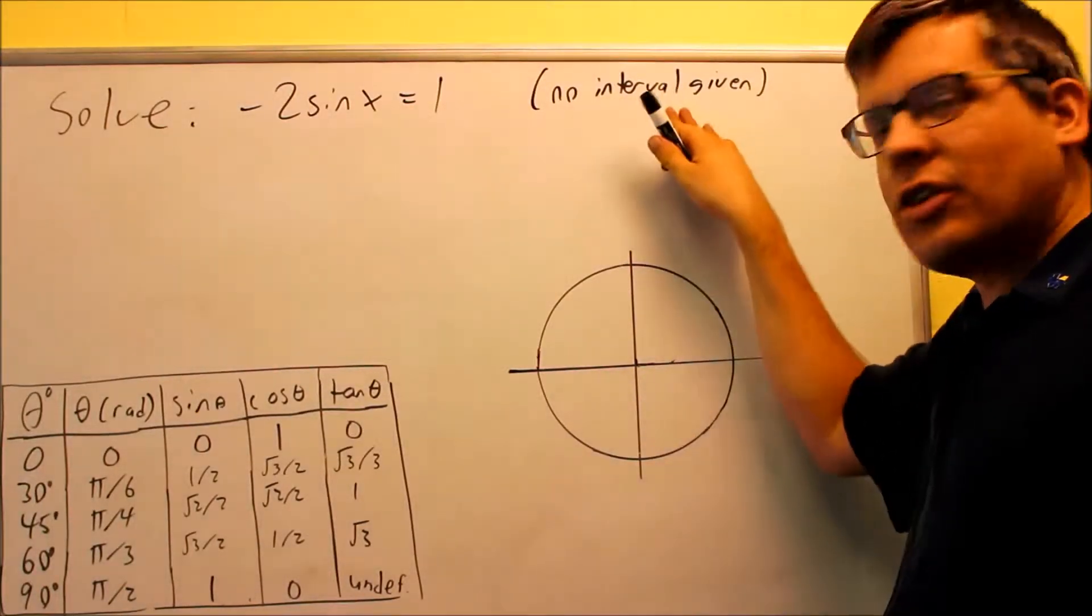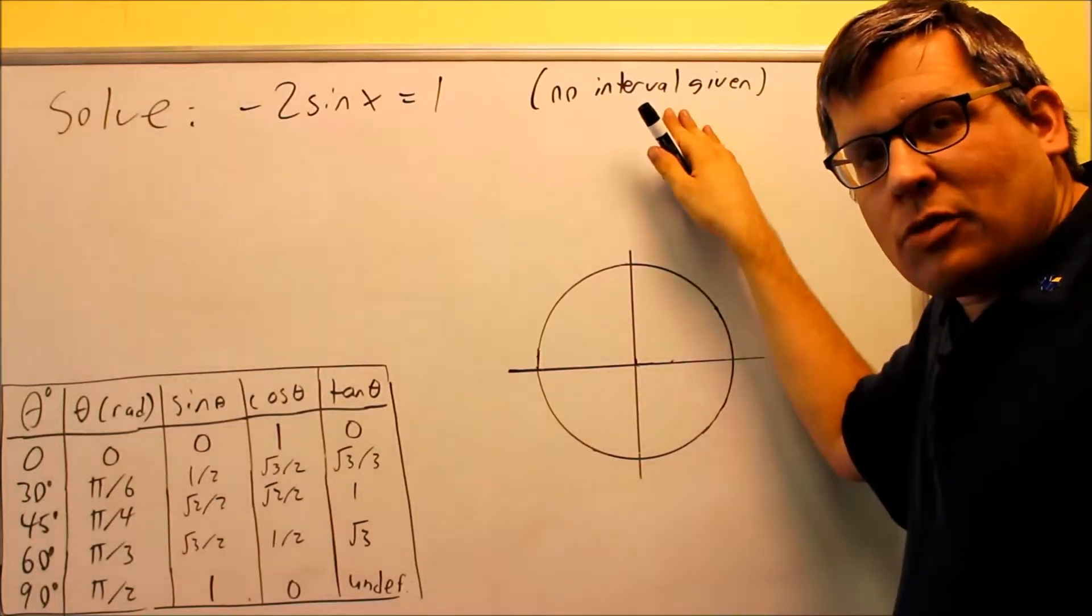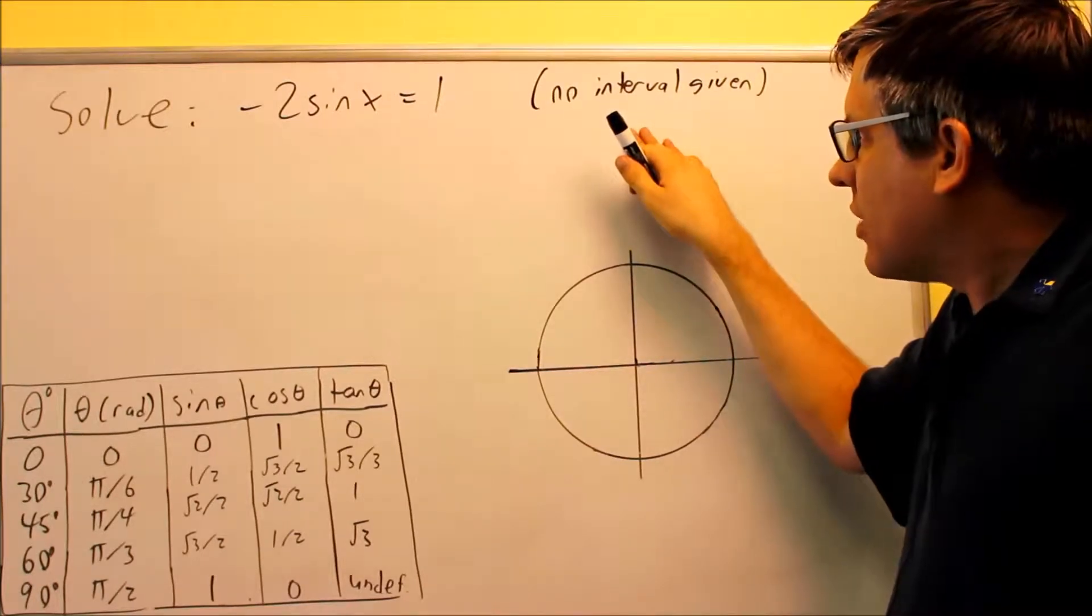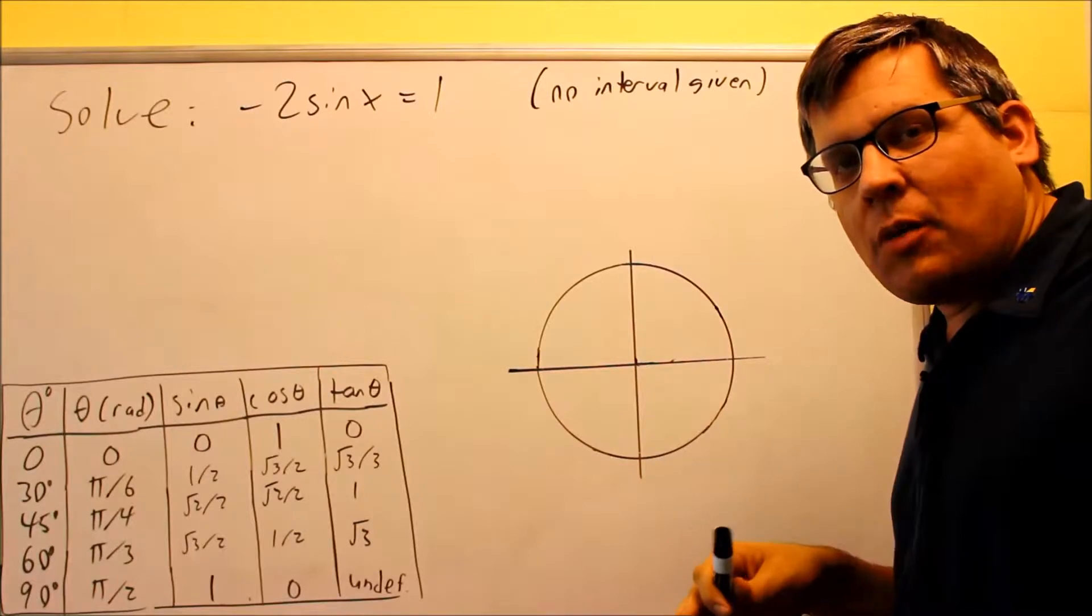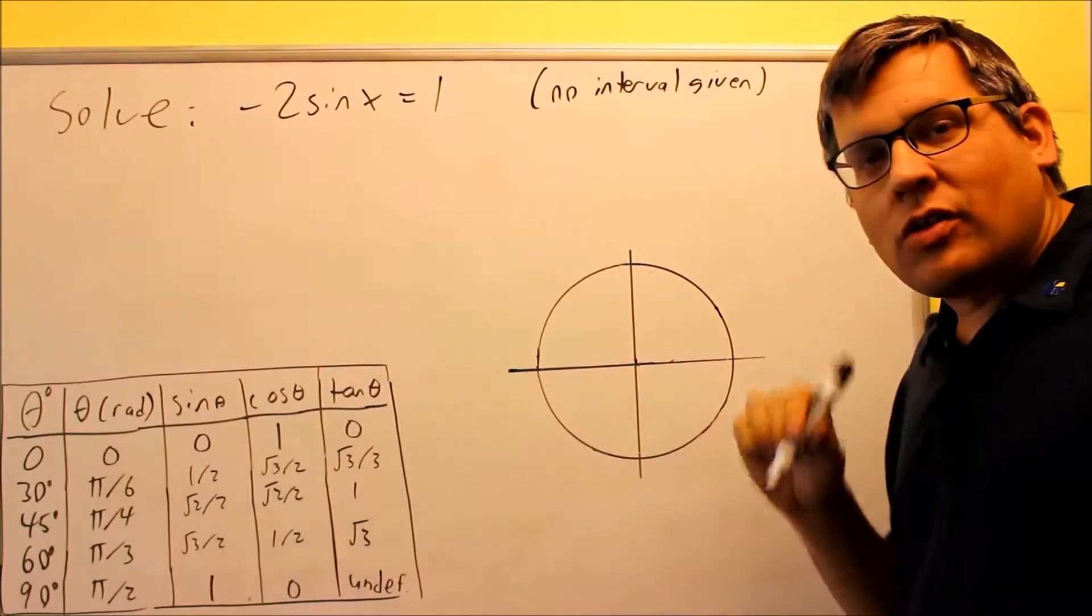For this next example, we don't have any interval that's given. Because we don't have an interval given, that means we have to do one extra thing for our answer. But to start out the problem, everything we're going to do is exactly the same as before.